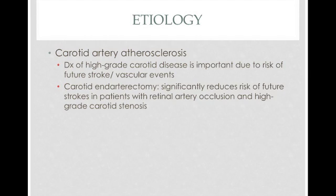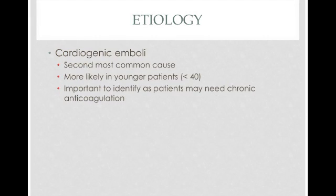The cause in most cases is carotid artery atherosclerosis. It's important to figure out the cause because it helps you refer the patient to another specialty that could potentially help them or prevent them from having a stroke. A carotid endarterectomy significantly reduces the risk of future strokes in patients with retinal artery occlusion and high-grade carotid stenosis. The second most common cause is cardiogenic emboli, which is more likely in younger patients. It's important to identify this as well because these patients may have AFib and might need chronic anticoagulation — without which they could potentially have a stroke.